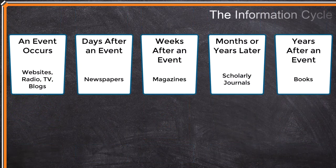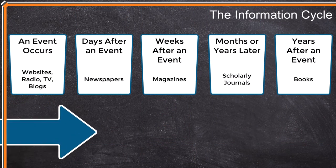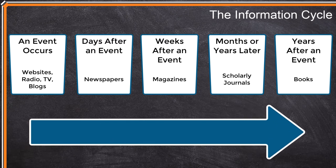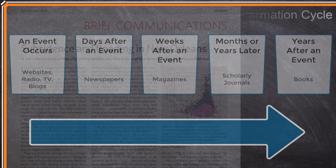The information cycle may be easy to understand, but it doesn't always happen in a linear way. An expert may publish an article in a scholarly peer-reviewed journal, and then the results of that study may become popular news.